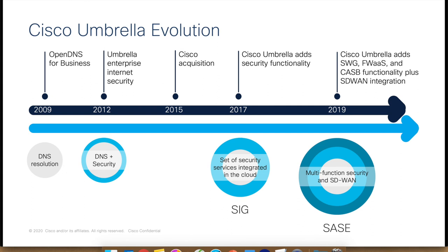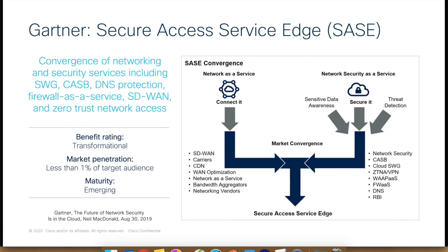That's where Umbrella comes in. Most people are familiar with it — it used to be OpenDNS, which started as a DNS resolution platform. After that, security features were added, and more recently full secure internet gateway capabilities were added, allowing you to send actual web traffic to Umbrella's cloud, not just DNS traffic. This is evolving into a SASE-y platform — a term from Gartner that describes the convergence of networking and security services including secure web gateways, CASB, DNS protection, firewall as a service, SD-WAN, and zero trust — all bundled into a cloud-based platform.